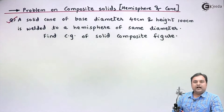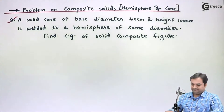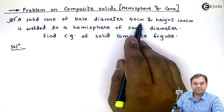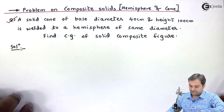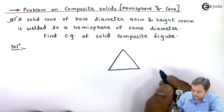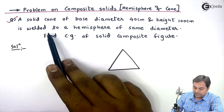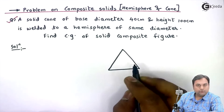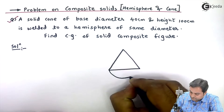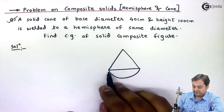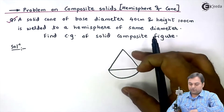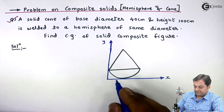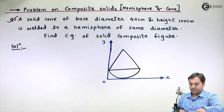Whatever is given in this question, I will first draw the diagram. It is given a solid cone of base diameter 40 centimeter and height 100 centimeter. I'll draw the cone here — we have a solid cone and it is welded to a hemisphere of same diameter, meaning at the base of this cone one hemisphere is welded. Now I will place this composite solid on an axis system with the origin.